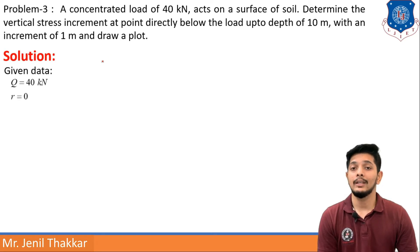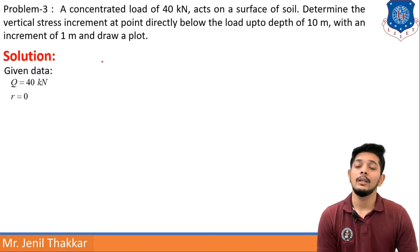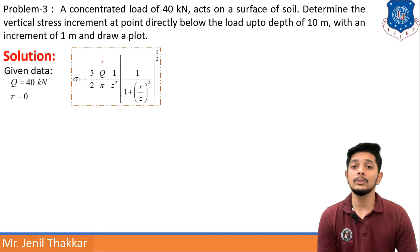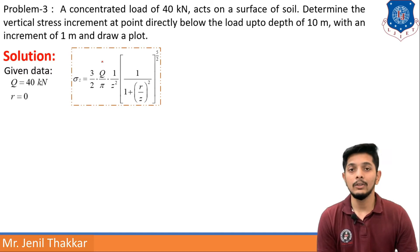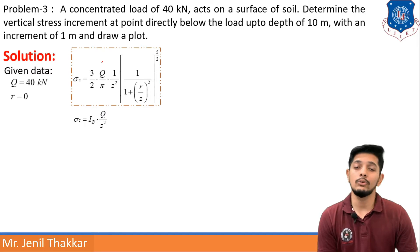Solution: given data — Q is equal to 40 kN, R is to be taken as 0. Boussinesq's formula is used: σz is equal to Ib multiplied by Q divided by z square.